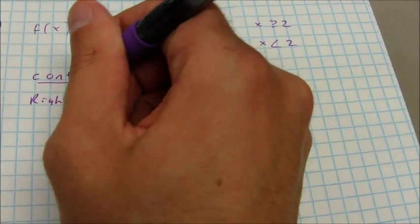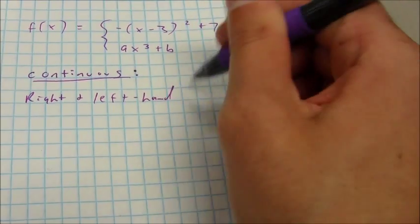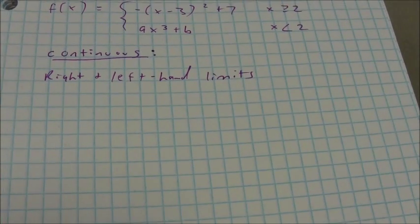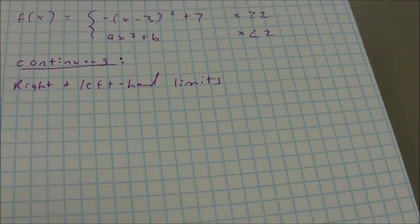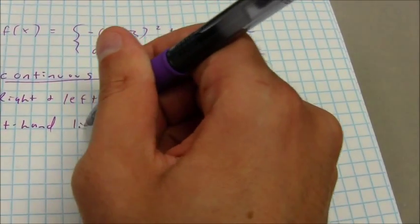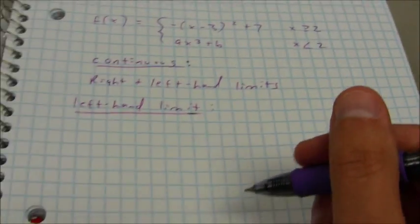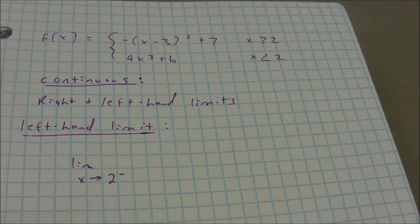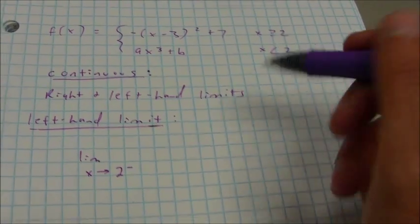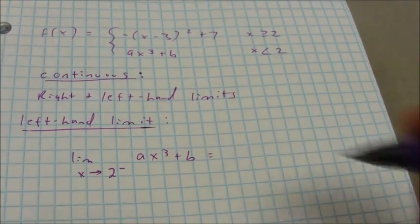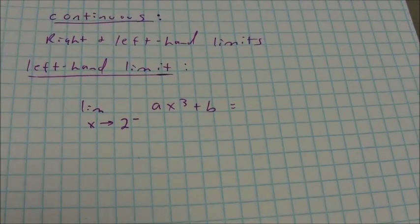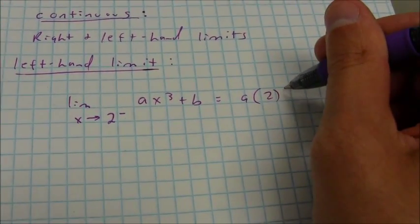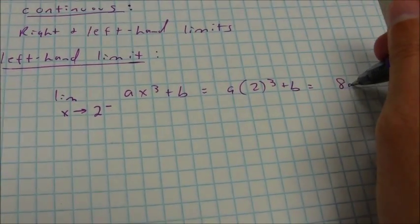I'm going to find the right and left-hand limits — these values need to be the same. For the left-hand limit, that's when x is less than 2. This is the limit as x approaches 2 from the negative side, which uses the ax cubed plus b part of the equation. This function is defined at x equals 2, so I can substitute in 2 for x, and I end up getting 8a plus b.